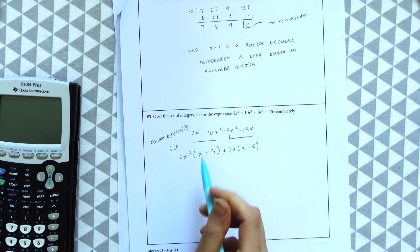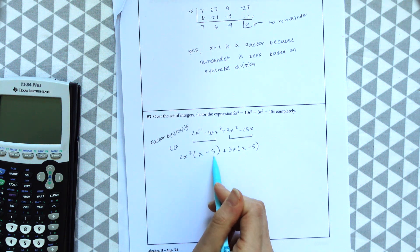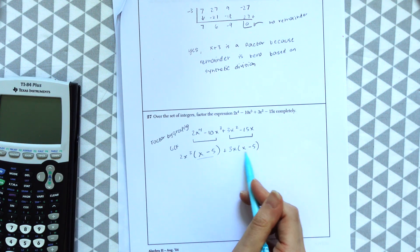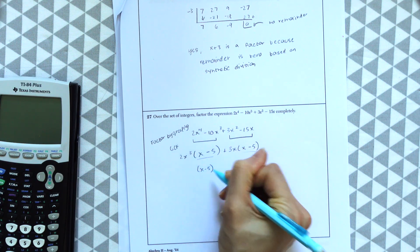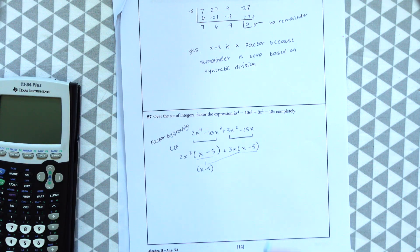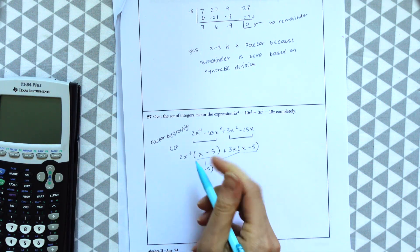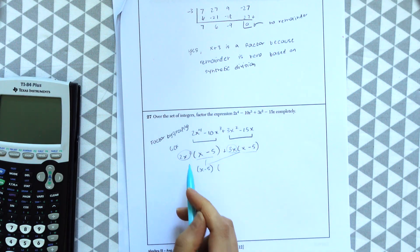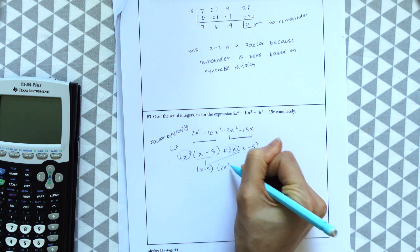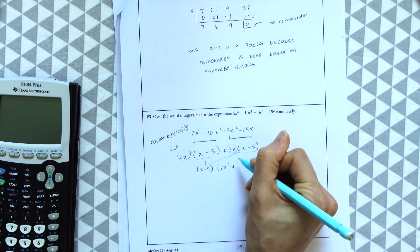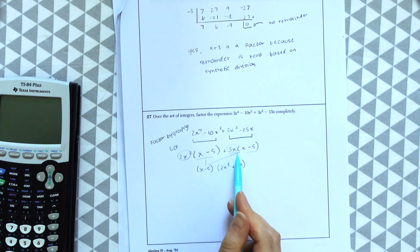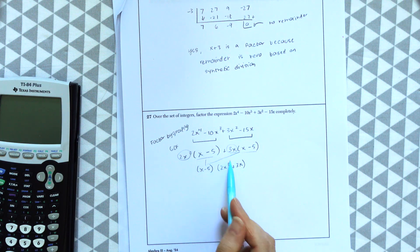When doing factor by grouping, you want to make sure that you end up with the same thing inside the parentheses. So notice we have an x minus 5 here and an x minus 5 here. And we're going to bring that down, x minus 5. And the other thing you're going to bring down is what is outside the parentheses. Outside we have 2x cubed and 3x.